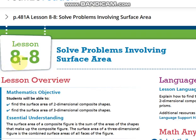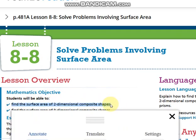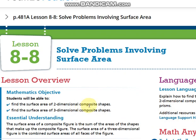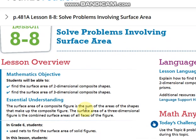After that, we will take Lesson 8-8, which is solve problems involving surface area. What is the surface area and what is the difference between surface area and volume? We will focus on finding the surface area of two-dimensional composite shapes. So what is a composite shape? Also, find the surface area of three-dimensional composite shapes.